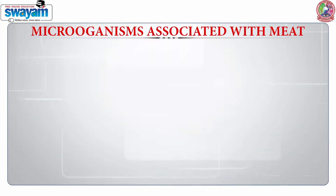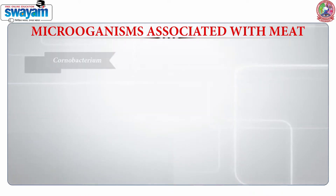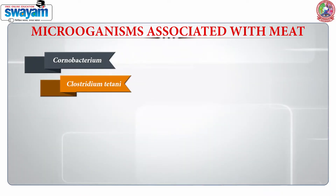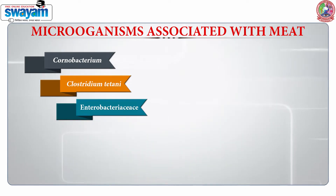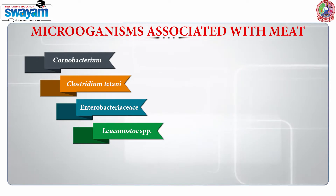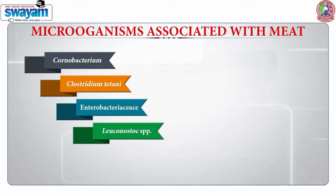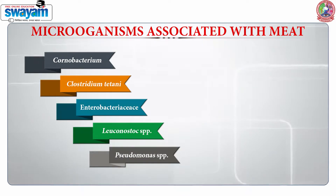When we talk about the microorganisms associated with meat, they can be Corynebacterium, Clostridium tetani, Enterobacteriaceae. We can also have various other species of Leuconostoc which can be associated with the meat. We also see the incidence of Pseudomonas.